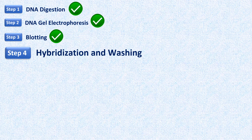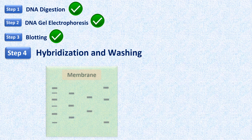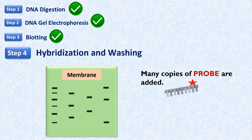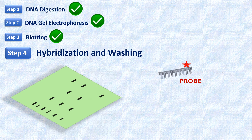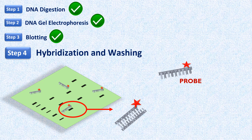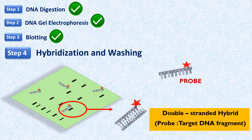The next step is hybridization and washing. The nylon membrane is incubated with many copies of a nucleic acid probe — for example, a labeled single-stranded DNA molecule — under appropriate conditions. The probe will bind to the target sequence by complementary base pairing and form a double-stranded DNA hybrid. Unbound probes are then removed by washing.